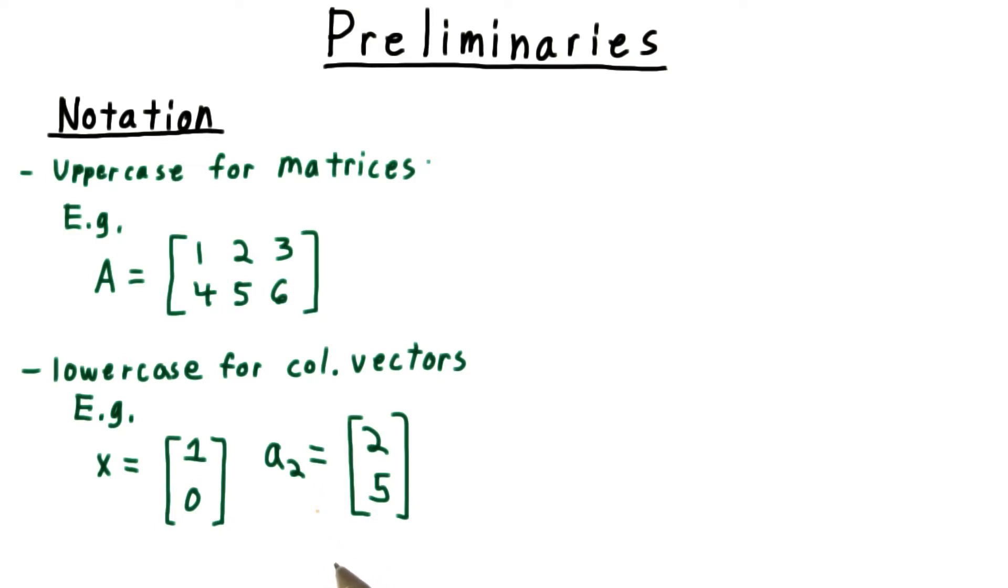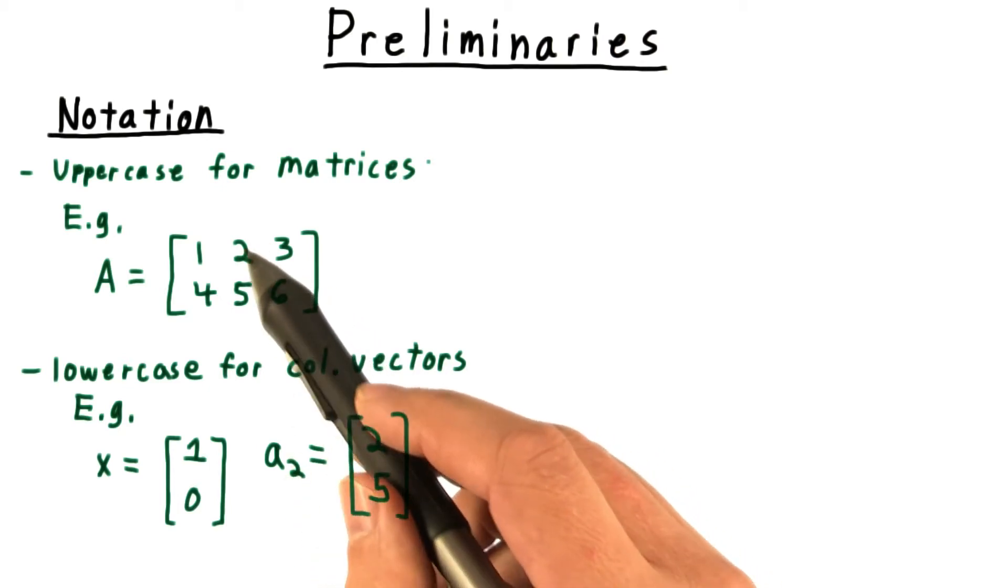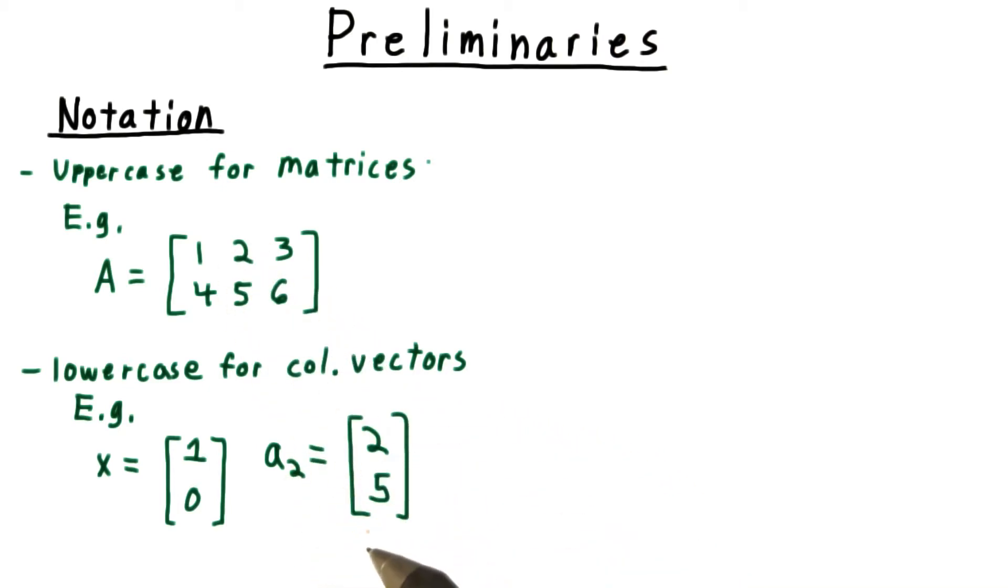Also, we'll often use the lowercase version of a matrix to indicate a column. Thus, A2 here refers to the second column of the matrix A.